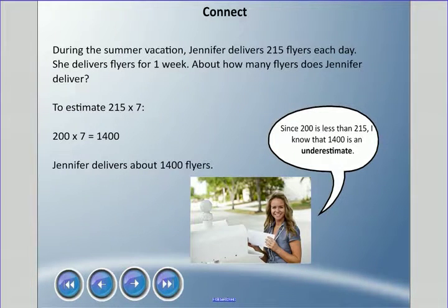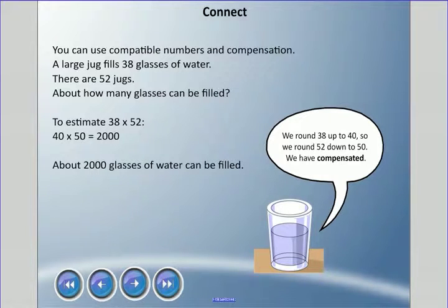We can also use compatible numbers and something called compensation. A large jug fills 38 glasses of water, and there's 52 jugs. About how many glasses can be filled? The exact answer is 38 times 52, but if we use compatible numbers and compensation, we can change 38 to 40 and 52 to 50, and we get about 2000 glasses of water. We're calling this compensation because with the 38 we're going up to 40, and with the 52 we're going down to 50. Compensation is when you go up one way and go down the next way.